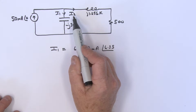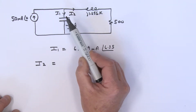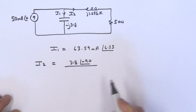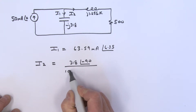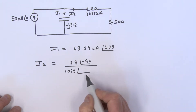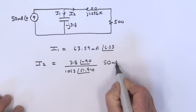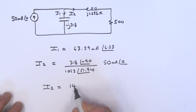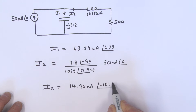For i2 we use the same current division approach, taking the opposite impedance which is 318 at angle minus 90°, divided by the total impedance sum of 1063 at angle 61.94°, multiplied by 50 milliamps at angle 0. Working this out, i2 equals 14.96 milliamps at an angle of minus 151.91 degrees.